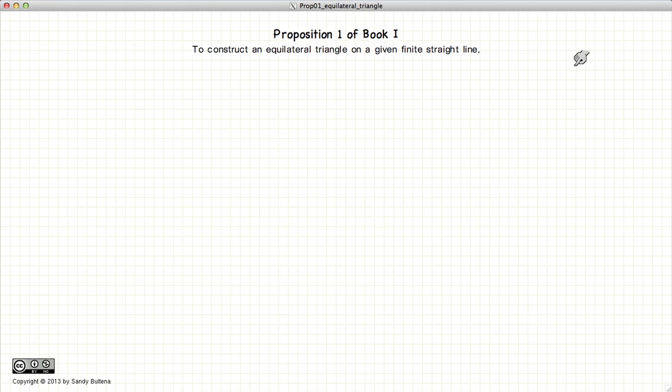This video presentation is going to be on Proposition 1 of Book 1, which gives us the methods necessary to draw an equilateral triangle on a given line segment. So if we have a line segment, this proposition shows us how to construct an equilateral triangle.